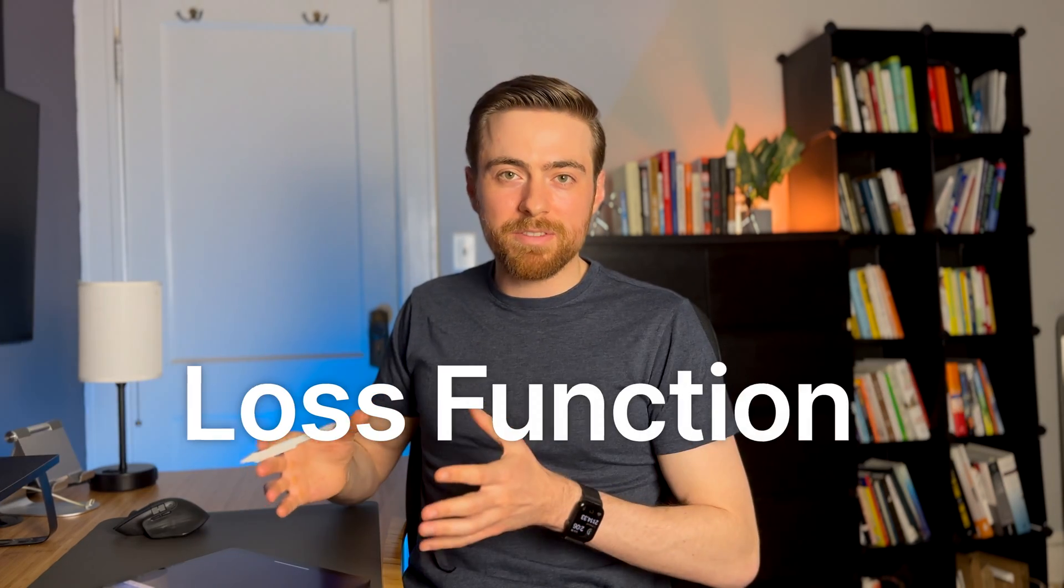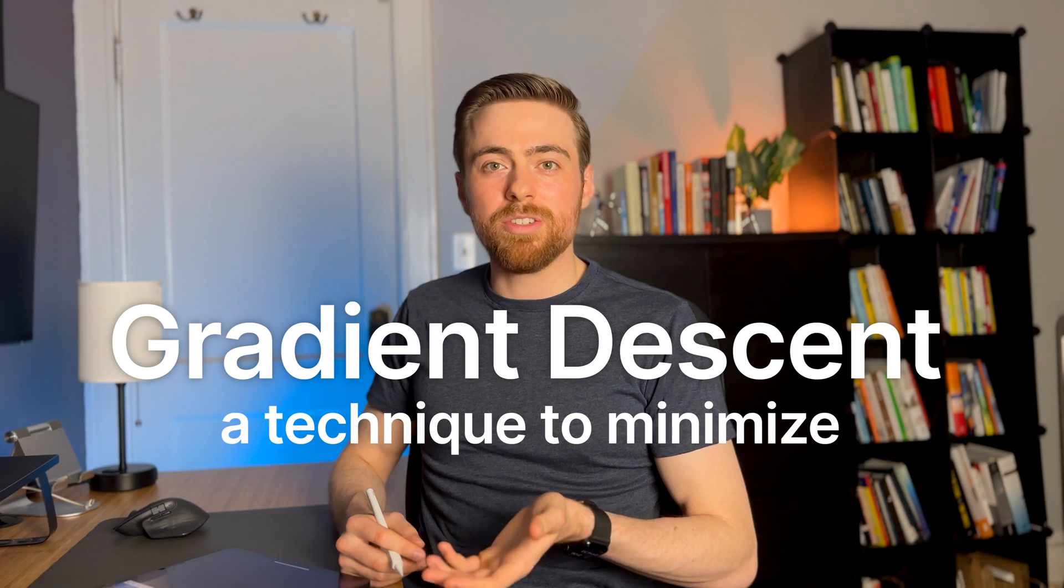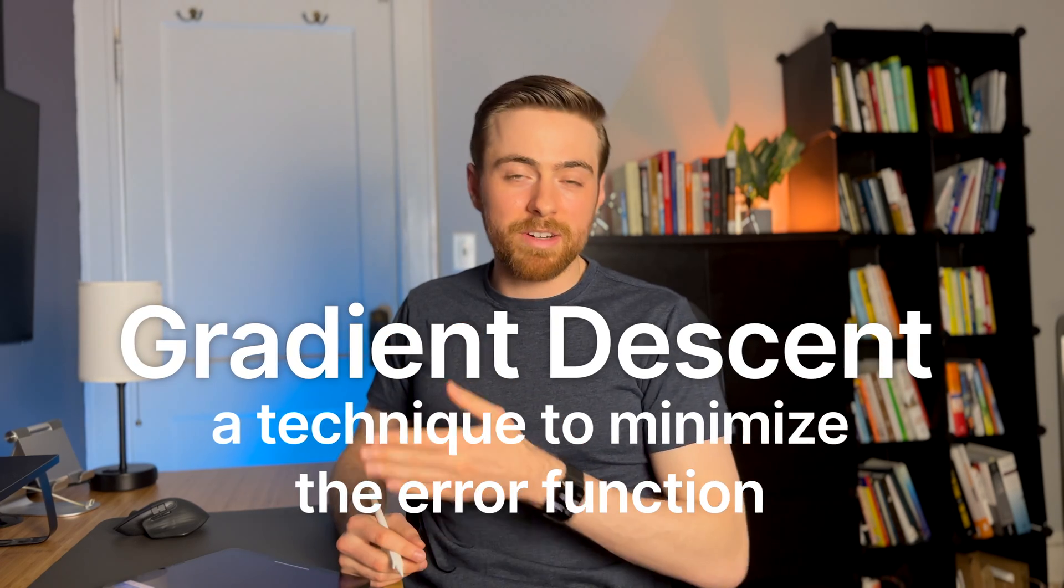Machine learning algorithms have an error function, sometimes called a loss function or a cost function. And then, like ChatGPT mentioned, gradient descent is a technique used to minimize the error function and it involves taking lots of derivatives repeatedly.